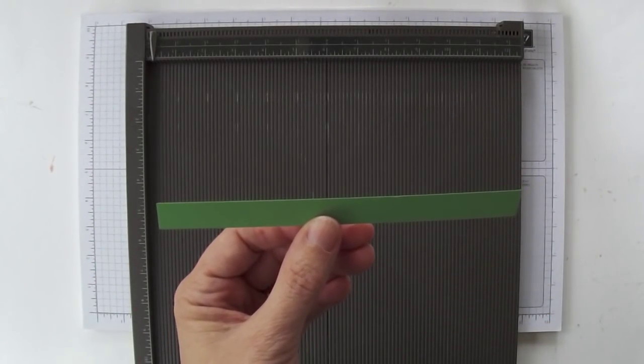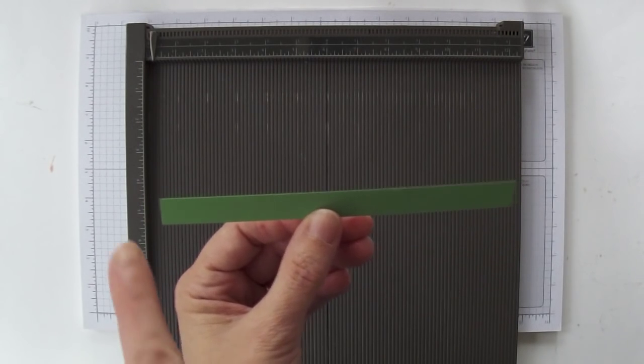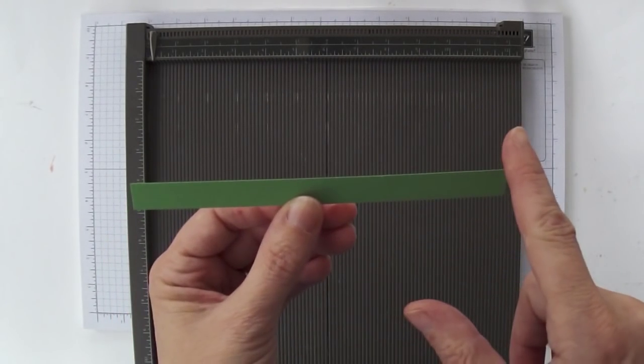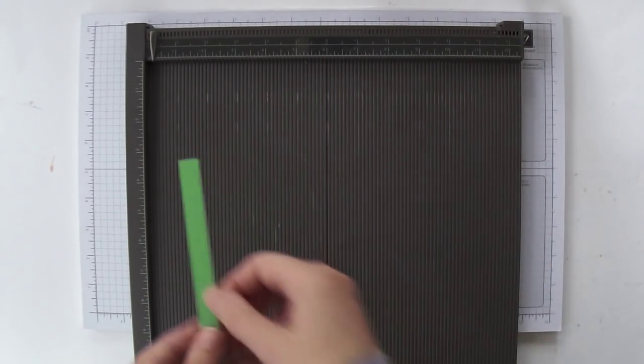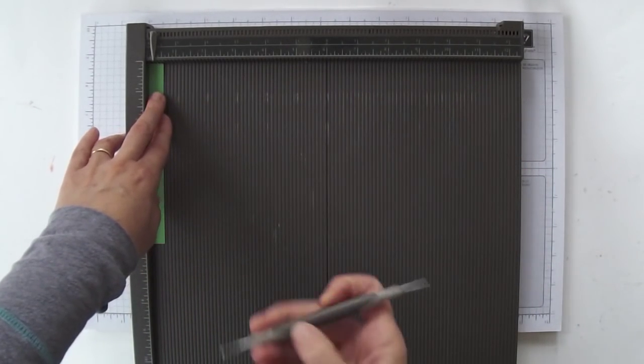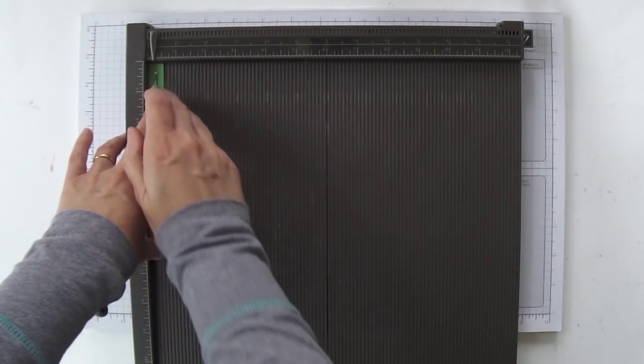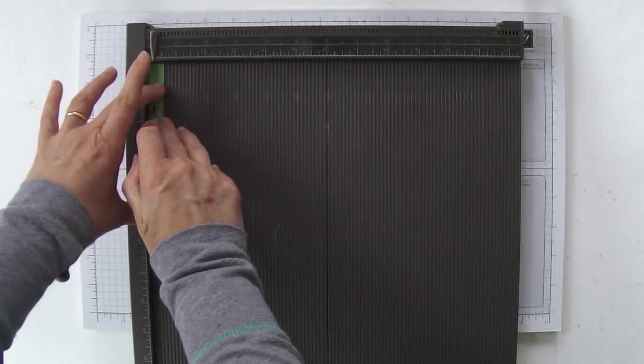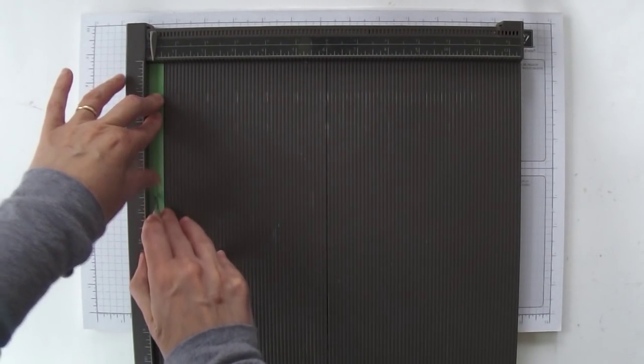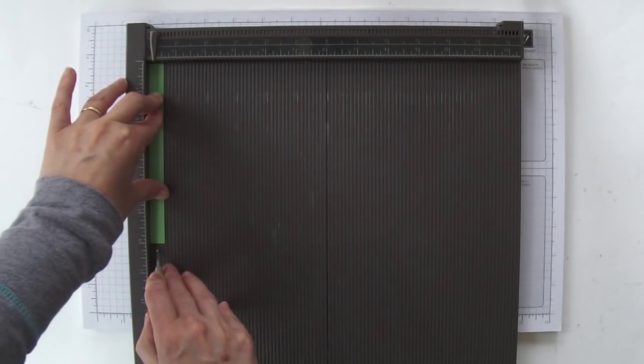To start off with, you're going to need a piece of cardstock that is 6 inches by half an inch. You're going to put the short side up at the top of your scoring board and score at the quarter inch mark. This is a long skinny strip so you might need to move your fingers a little bit as you're scoring to get it all the way down.